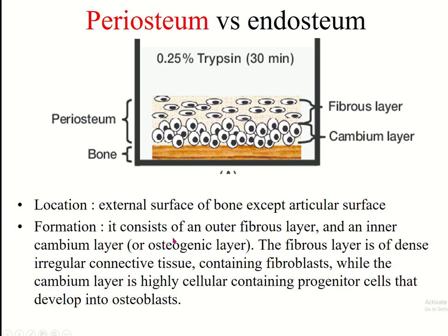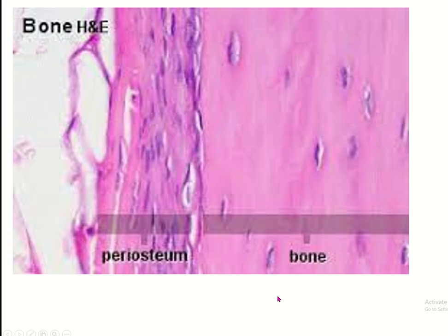The periosteum has two layers: an outer fibrovascular layer and an inner osteogenic layer. The fibrovascular layer is formed by dense irregular connective tissue containing fibroblasts. The inner osteogenic layer contains osteoprogenitor cells which convert into osteoblasts and are able to form new bone. This is the histology of the periosteum — outer fibrovascular layer and inner osteogenic layer.